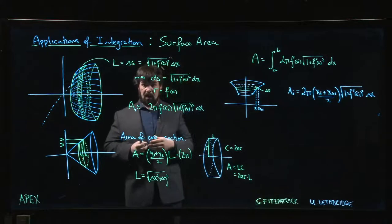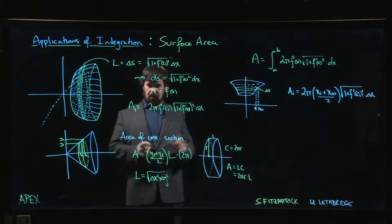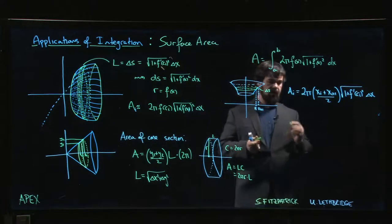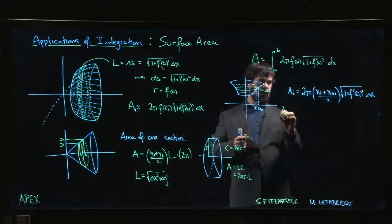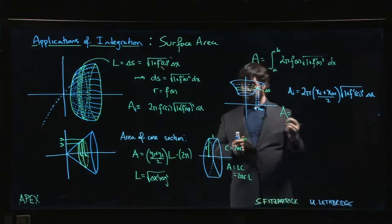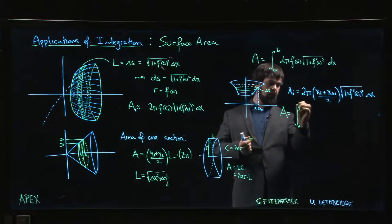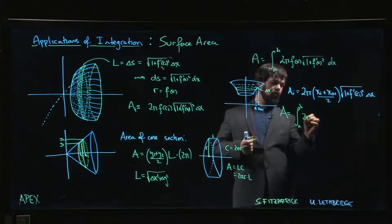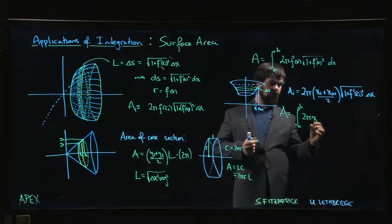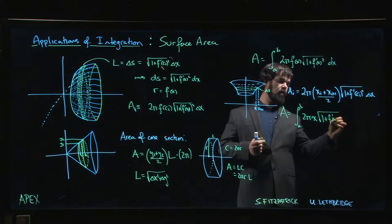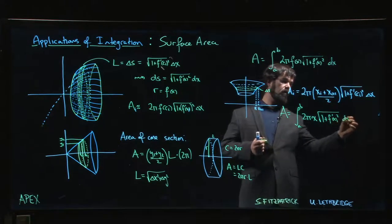And so again, you work through the details, set up the Riemann sum, take the limit. In this case, what you find when you set up the Riemann sum and take the limit as the number of partition points goes to infinity, is this time you're going to get the integral from A to B of 2π, instead of F of X, you're going to get 2π X, and then the square root of 1 plus F prime of X squared.